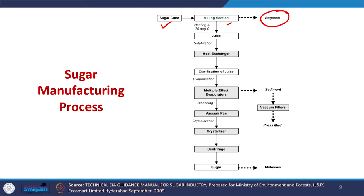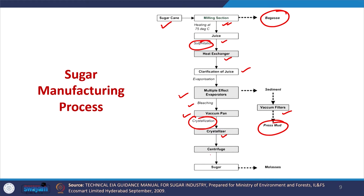After the milling section, juice comes out, is sulphited as described earlier, and then passes through a heat exchanger followed by clarification. Then evaporation occurs in the multiple effect evaporator, from which sediment is extracted and vacuum filtered to get press mud — a solid waste from the sugar industry. Bleaching is done on the concentrated slurry, which then goes to the vacuum pan where crystallization happens. From the crystallizer, centrifugation takes place, sugar is taken out, and molasses is sent to the distillery for alcohol production.